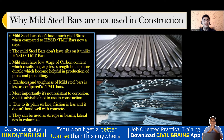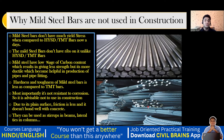Hardness and toughness of mild steel bars are less compared to TMT bars, because more grade means more toughness and more strength. Most importantly, mild steel is not resistant to corrosion, so it is advisable not to use it in construction. That is another prime reason — HYSD and TMT bars can resist corrosion, whereas mild steel cannot.